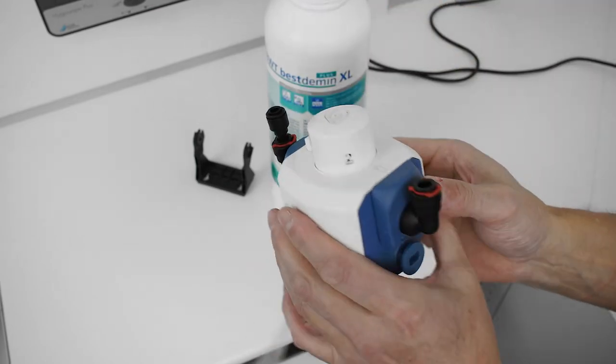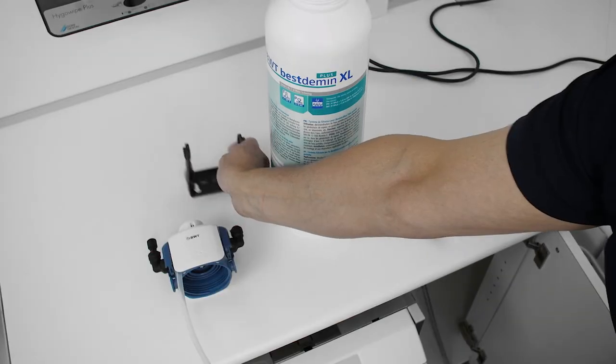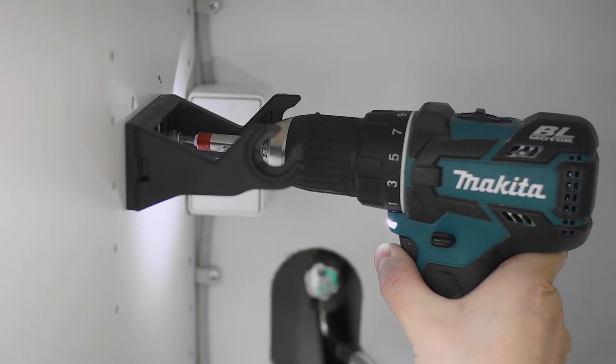Switch the bypass function from position 2 to position 0. Mount the black wall bracket onto the wall. Make sure there is enough headroom for the white filter head.